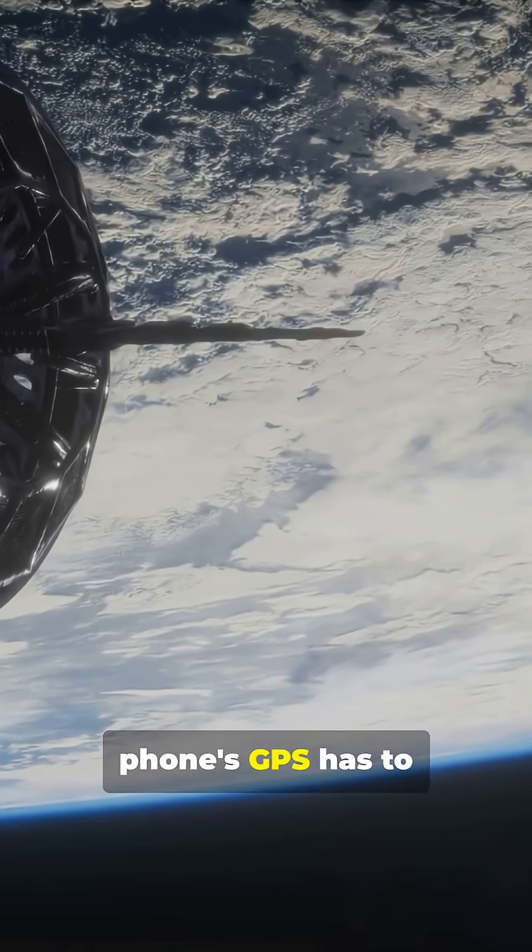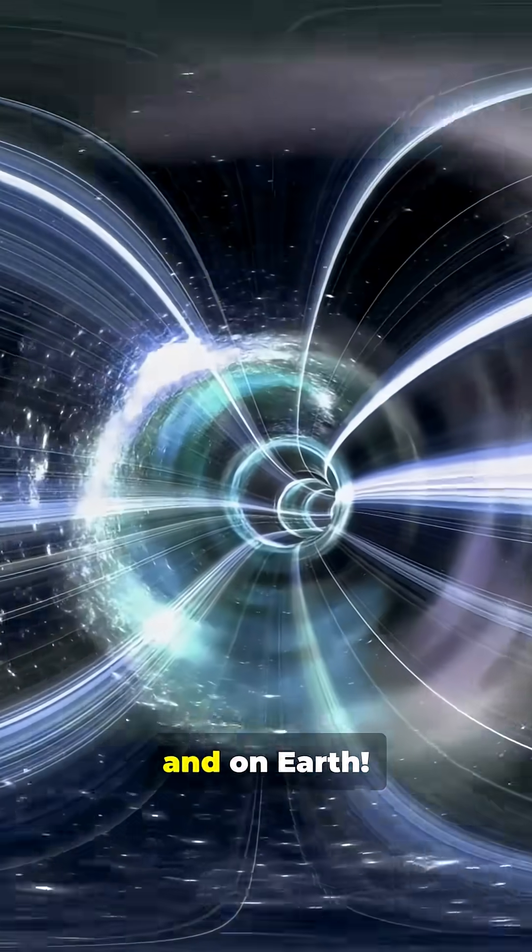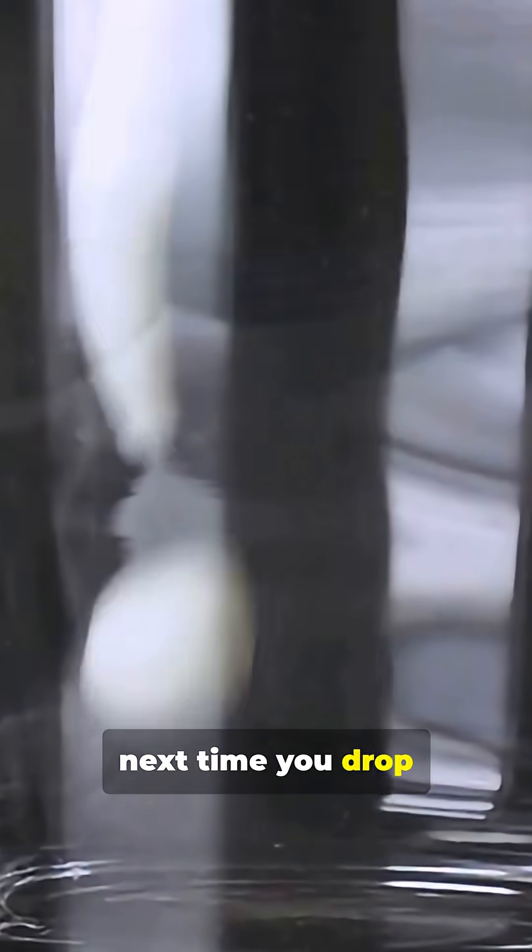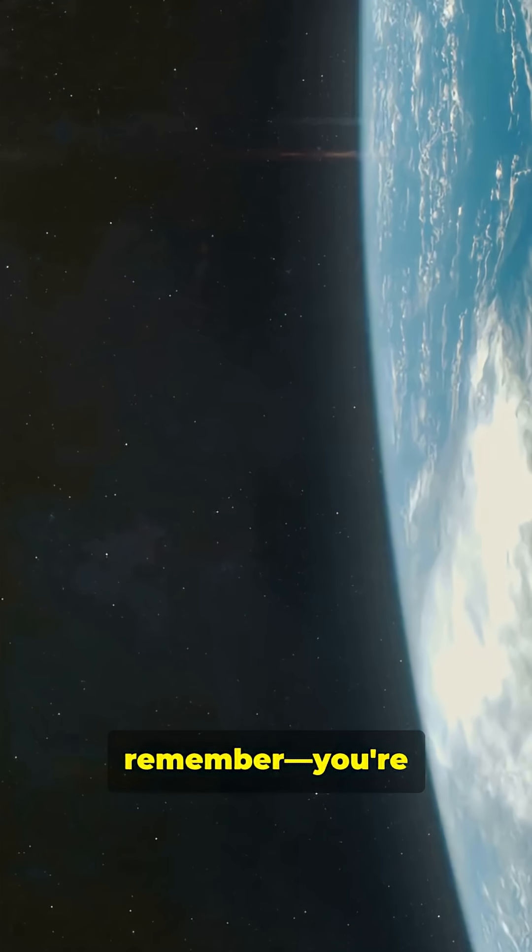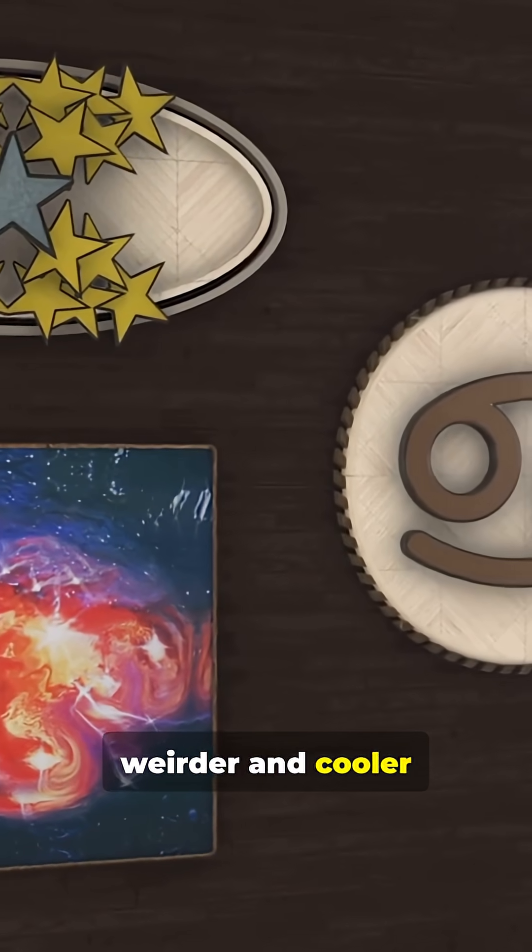And it's why your phone's GPS has to account for the fact that time ticks differently in space and on Earth. So next time you drop a ball or look up at the stars, remember you're living in Einstein's universe, where reality is way weirder and cooler than you ever thought.